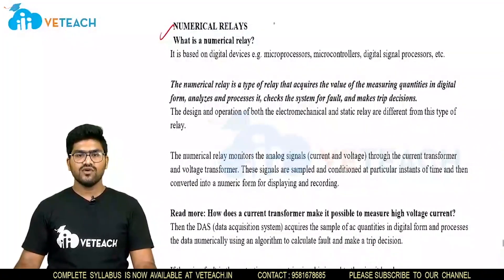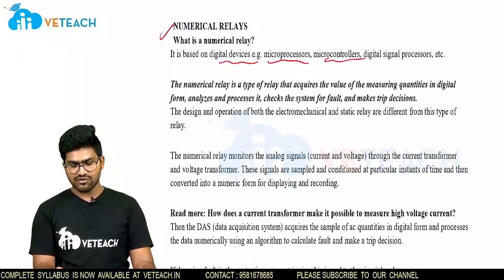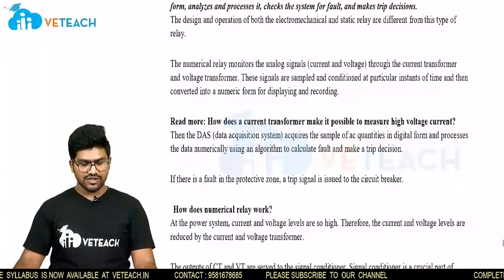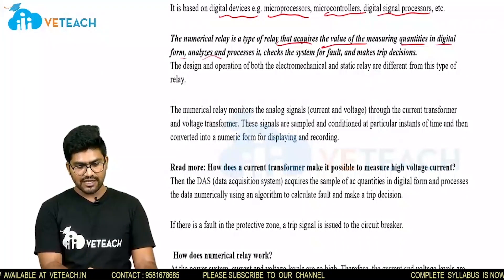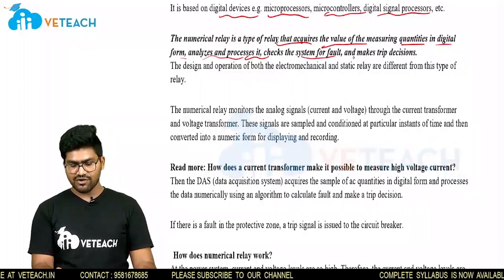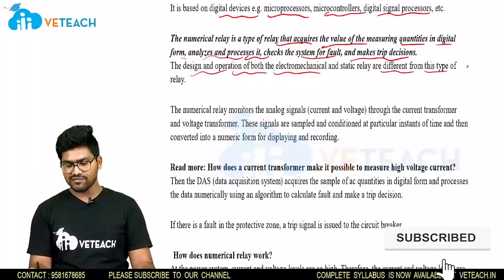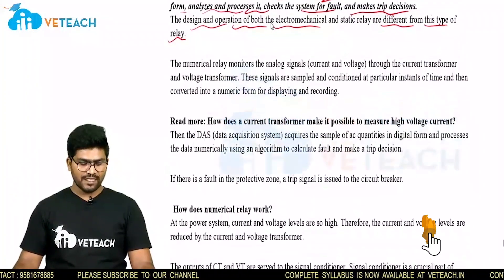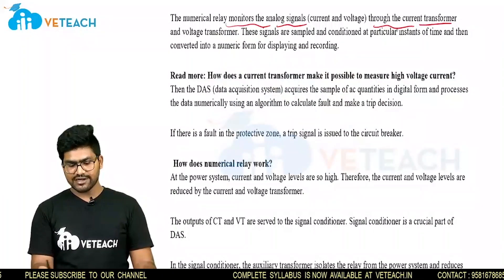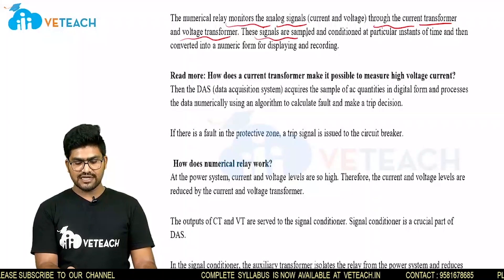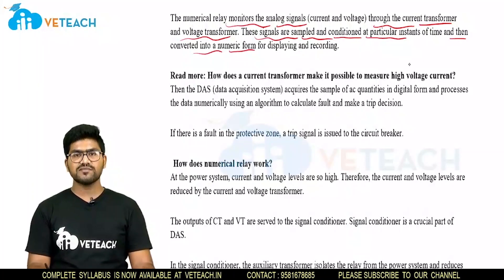Coming to numerical relays — what is a numerical relay? It is based on digital devices such as microprocessors, microcontrollers, digital signal processors, etc. The numerical relay is a type of relay that acquires the value of measuring quantities in digital form, analyzes and processes it, checks the system for fault, and makes trip decisions. The design and operation of both electromechanical and static relays are different from these two types of relays. The numerical relay monitors analog signals — current and voltage — through a current transformer and voltage transformer. These signals are sampled and conditioned at a particular instance of time and then converted into a numeric form for displaying and recording.